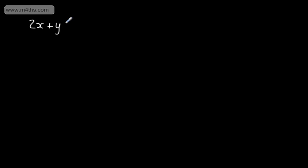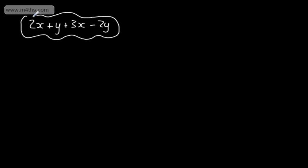In this video, we're going to look at solving basic equations with unknowns on one side. Let's start off by looking at the difference between an expression and an equation. An expression could be 2x plus y plus 3x minus 2y. This is an expression — a collection of algebraic terms. If we have an equation such as 2x is equal to 4, we will always have the equal sign in. So the difference between an expression and an equation is that an equation will have an equal sign.